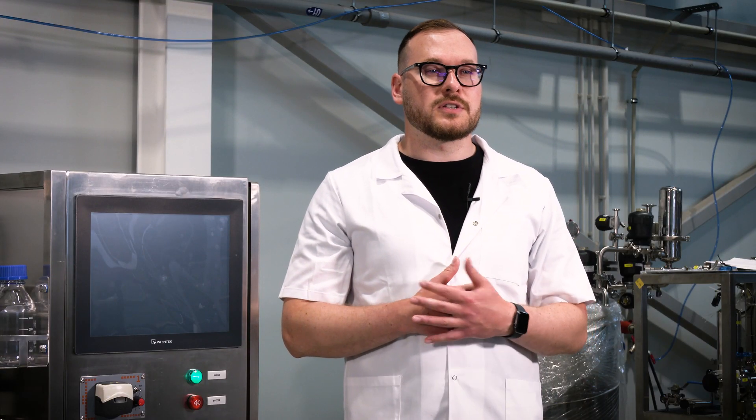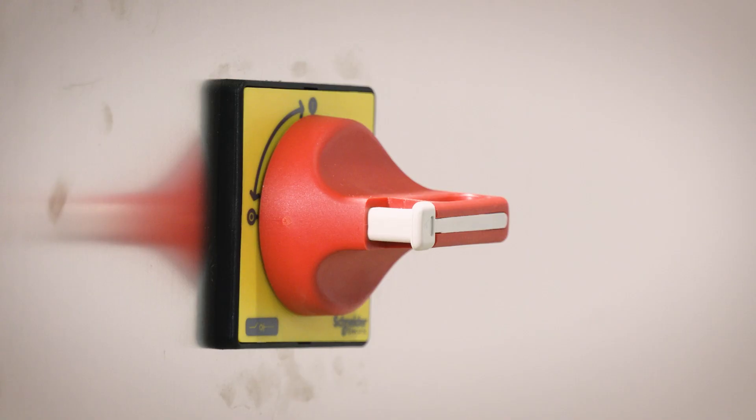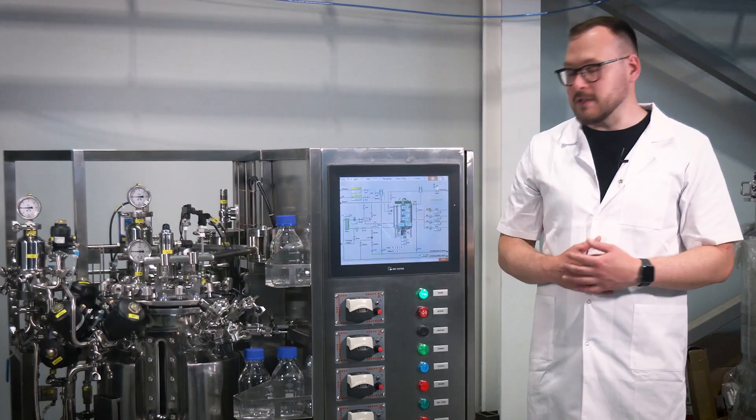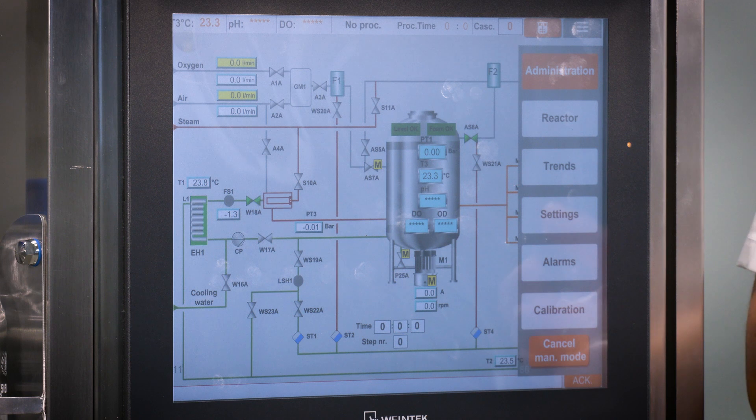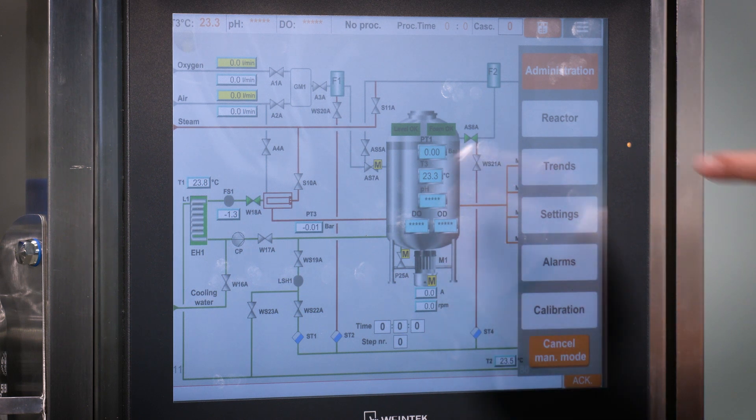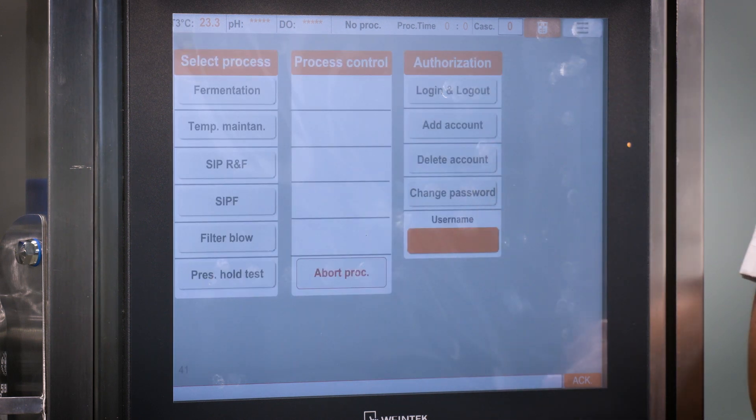To begin work with the bioprocess controller, follow the instructions. First, turn on the system by moving the on-off switch located on the right side of the control unit. Click on the menu button. Next, select administration, which will open the administration window.